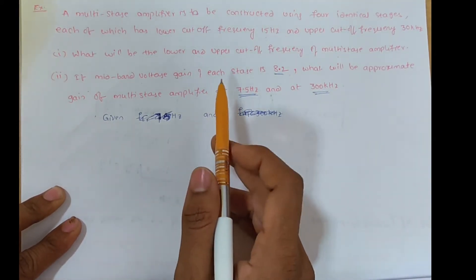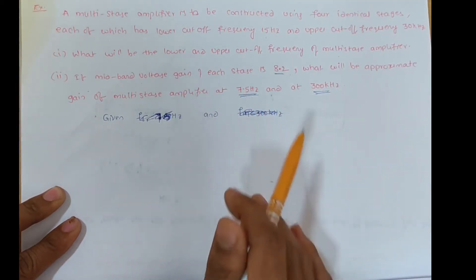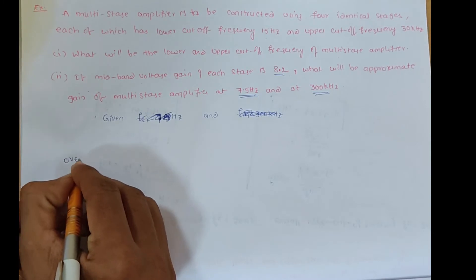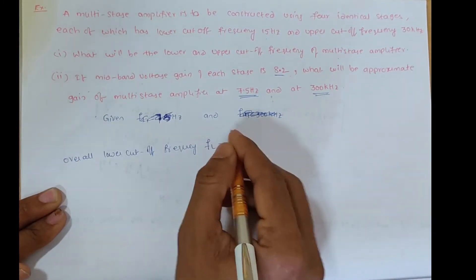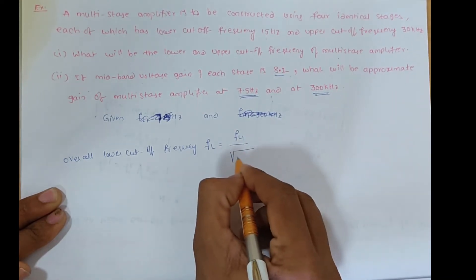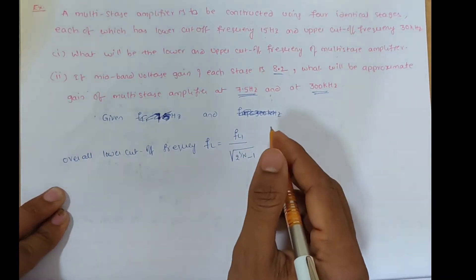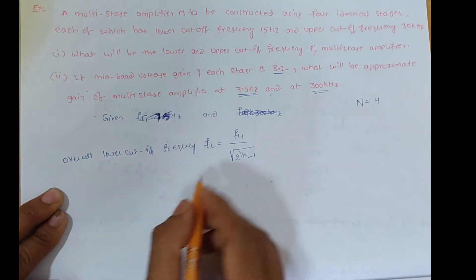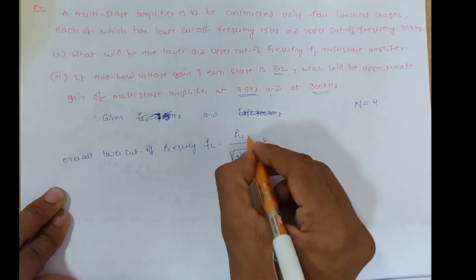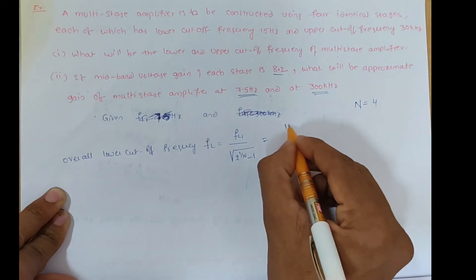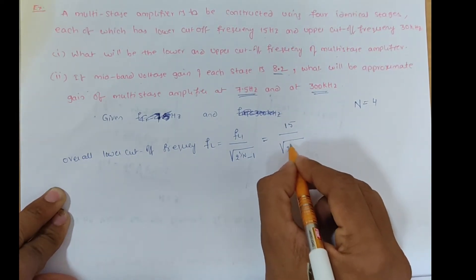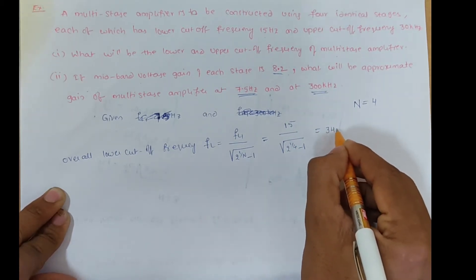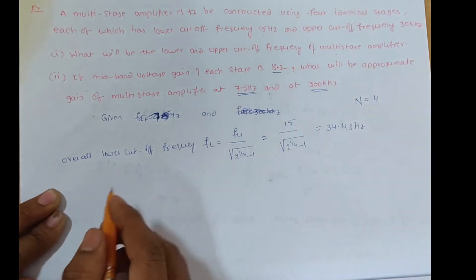We need to calculate the overall lower and upper cutoff frequencies of the multistage amplifier. The overall lower cutoff frequency FL_S = FL1 × √(2^(1/n) − 1). Here n = 4 identical stages. Substituting: FL_S = 15 × √(2^(1/4) − 1). We get approximately 34.48 Hz.